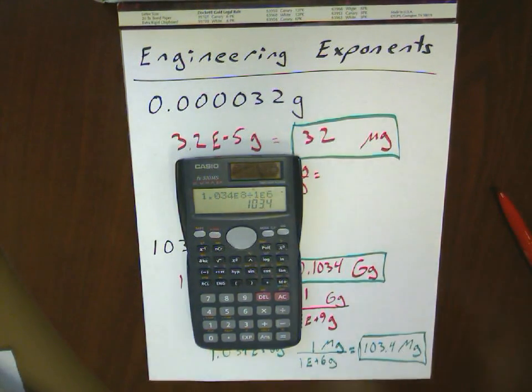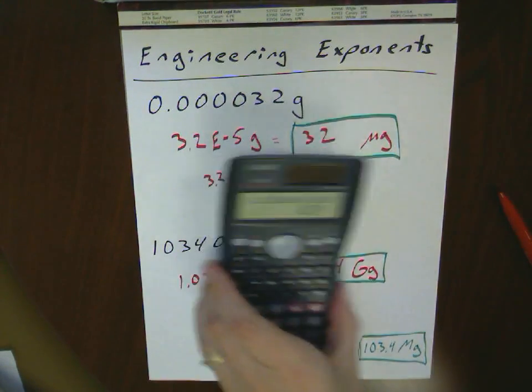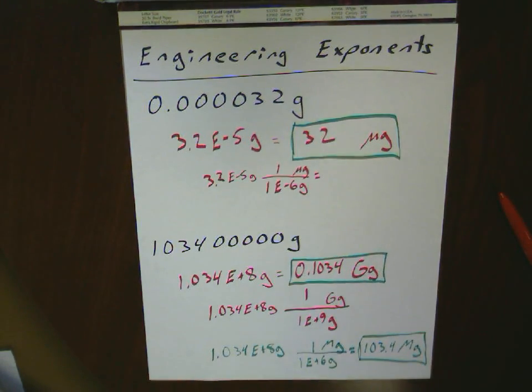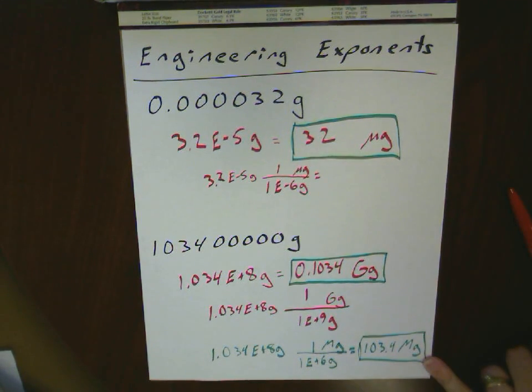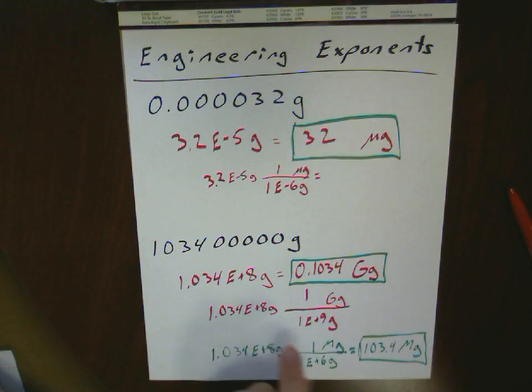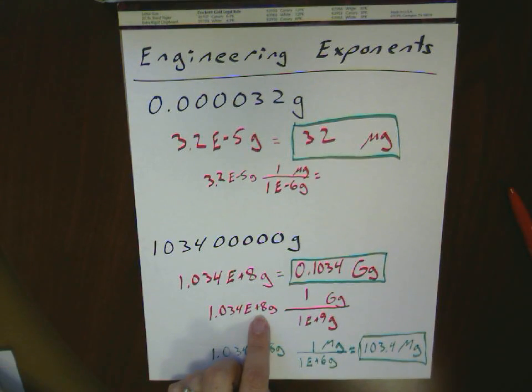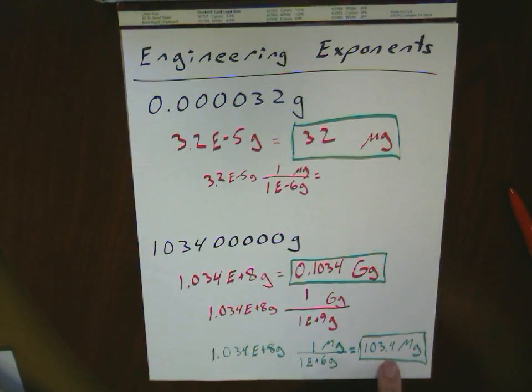Either one of those is appropriate depending on the type of engineering exponent rules you follow. When we're working on this for our homework sections, what you're going to find is that on some of these problems, they're already going to have the metric prefix that you want to use there. And you have to figure out how to take your answer from scientific notation and put it into the requested engineering exponent.